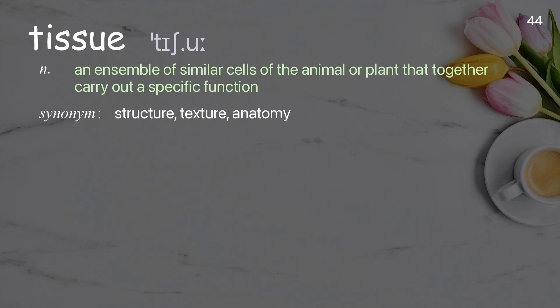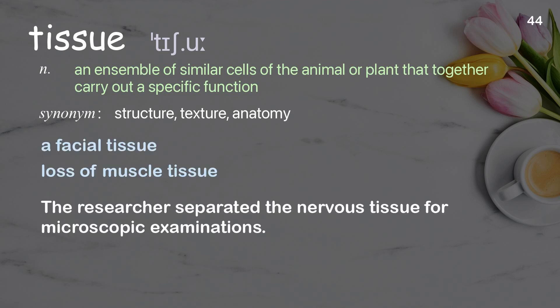Tissue. An ensemble of similar cells of the animal or plant that together carry out a specific function. Examples: a facial tissue, loss of muscle tissue. The researcher separated the nervous tissue for microscopic examinations.